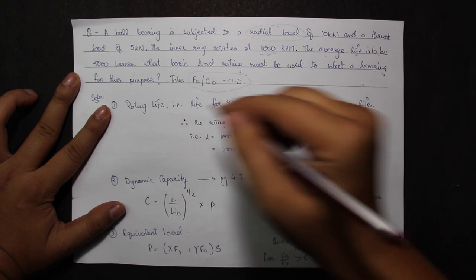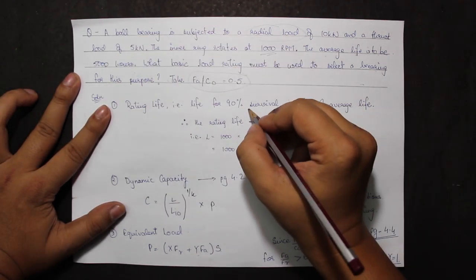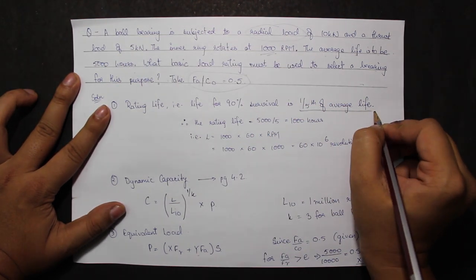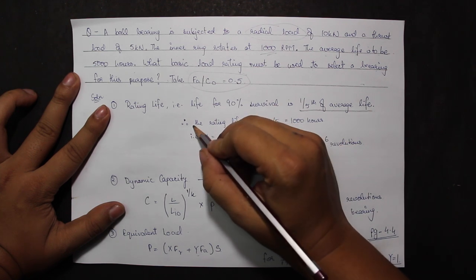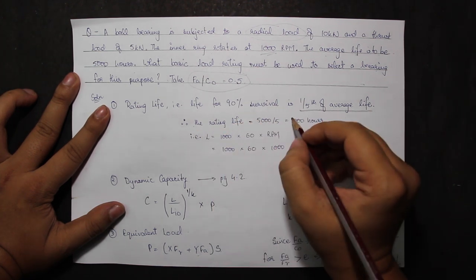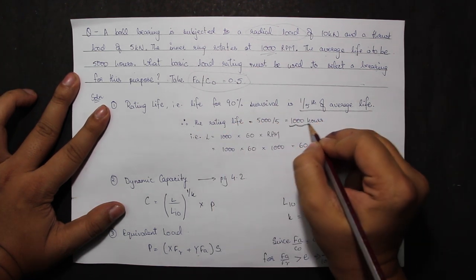The rating life, i.e. life for 90% survival, is one fifth of the average life. So the rating life would be 5000 divided by 5 or 1000 hours.